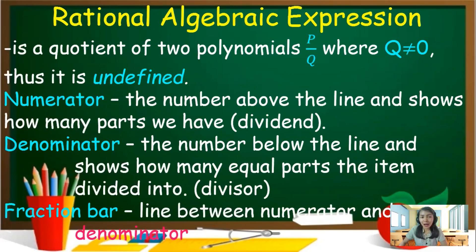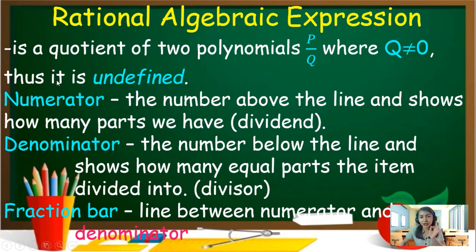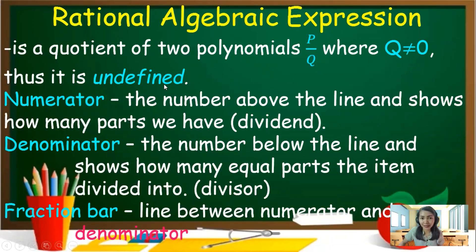Now, we have here the Rational Algebraic Expression. What is the meaning of rational from the root word ratio? It is a quotient — a fraction. A quotient is the answer in a division operation. Product is the answer in multiplication. Difference is the answer in subtraction, and sum is the answer in addition. RAE, the abbreviation of rational algebraic expression, is a quotient of two polynomials — both the upper and lower parts are polynomials — where q is not equal to 0. The bottom part of the fraction should not be 0, otherwise it will be called undefined. No number can be divided by 0 — it is imaginary, it is undefined.